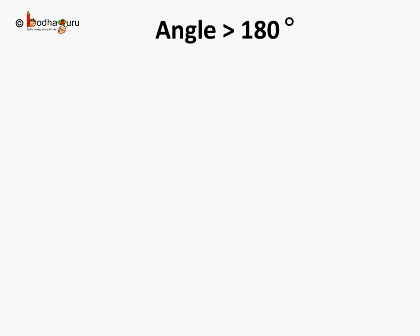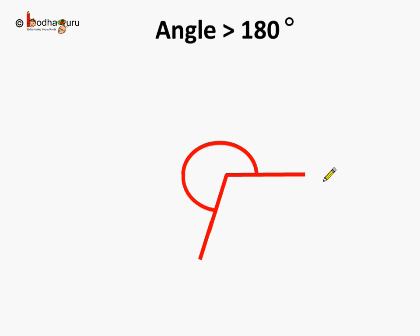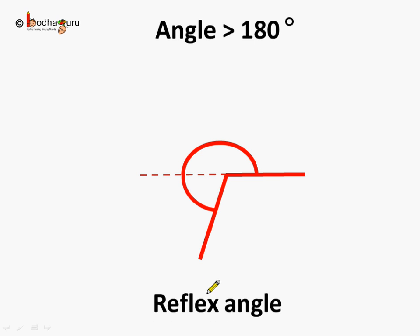Now you may ask: if there is an angle greater than 180 degrees, what is it called? Let us see that also. So here we make an angle. The angle between these two lines — if we consider this angle between these two lines, is it greater than 180 degrees? Yes. The angle up to here is equal to 180 degrees and this angle is extending further, so this angle is greater than 180 degrees. When the angle is greater than 180 degrees, we call it a reflex angle.